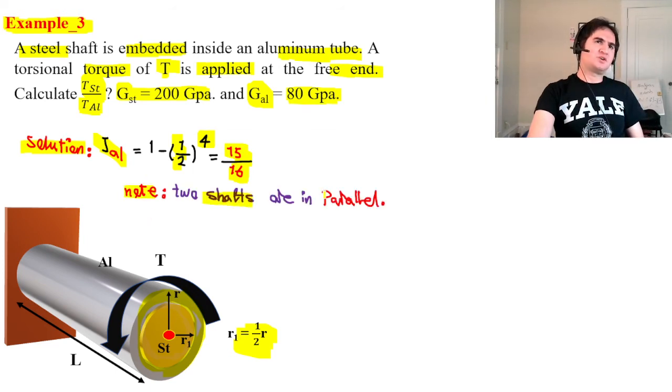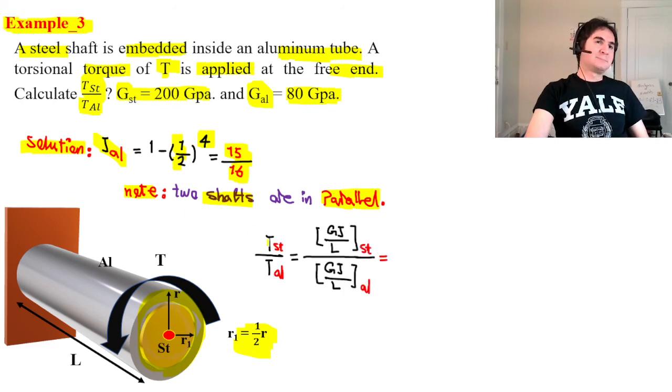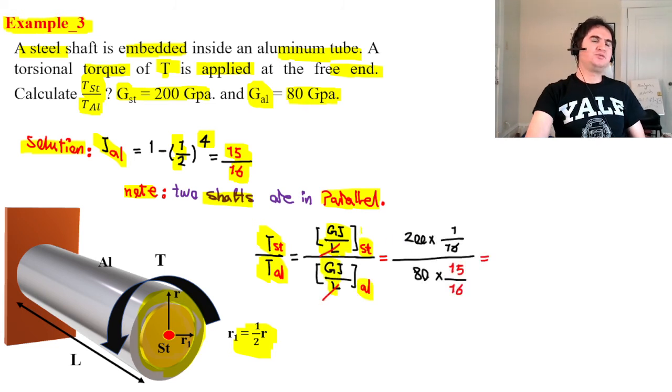Note, two shafts are in parallel. They have to twist with each other. There is no other way. In that case, share of torsion for steel over share of torsion of aluminum is GJ over L for steel divided by GJ over L for aluminum. L cancels out with this L.